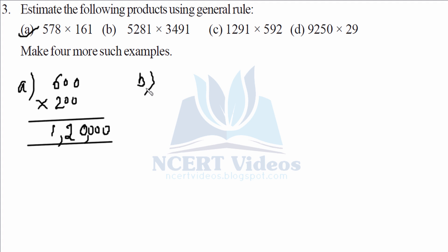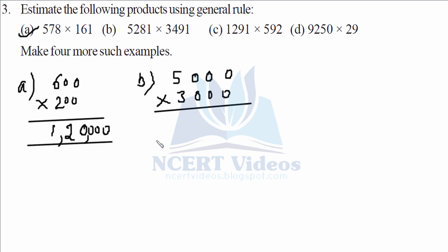For part B, rounding towards the thousands: we get five thousand and three thousand. Applying the general rule, we write six zeros (since both numbers have combined zeros), then five into three gives fifteen. So the answer is fifteen followed by six zeros.